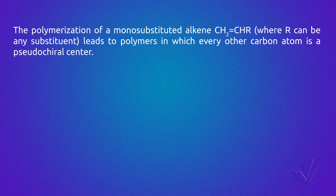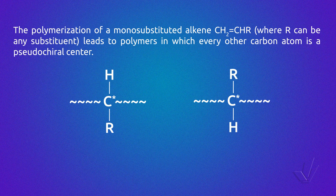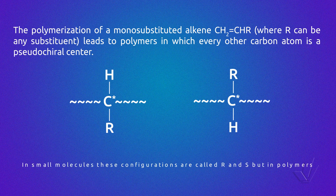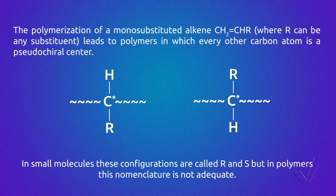The polymerization of a monosubstituted alkene, where R can be any substituent, leads to polymers in which every other carbon atom is a pseudo-chiral center. In small molecules, these configurations are called R and S, but in polymers this nomenclature is not adequate. The regularity in the configuration of successive pseudo-chiral centers determines the overall order structure or tacticity of the polymer chain.